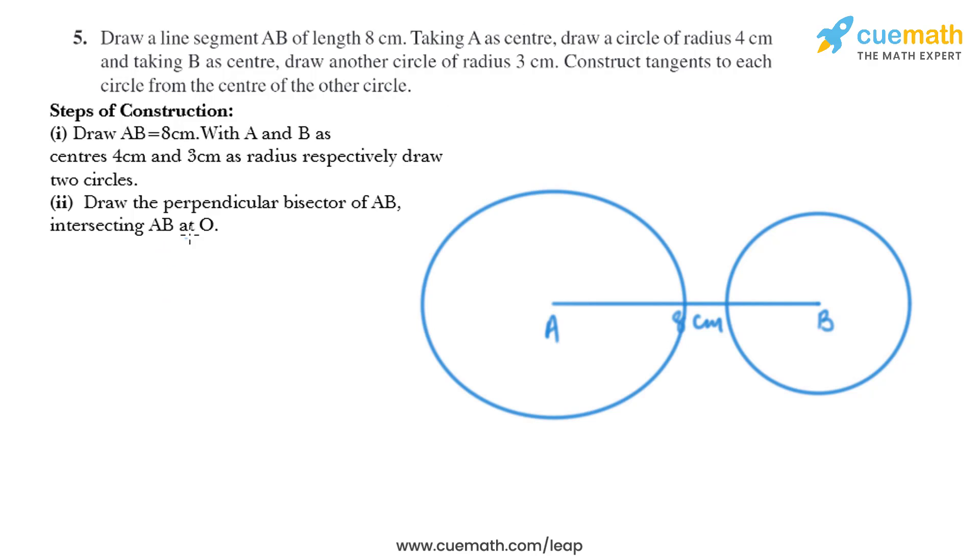Now in the next step, draw the perpendicular bisector of AB intersecting AB at O. So we'll draw the perpendicular bisector of AB like this and then we'll mark the point of intersection as O.